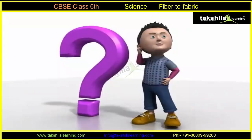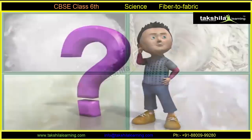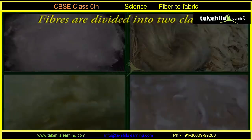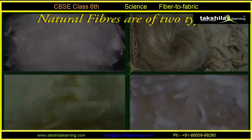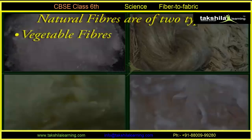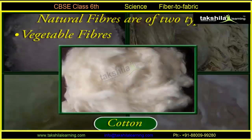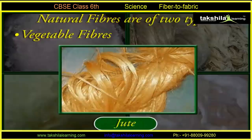You might be thinking: where do these fibers come from? On the basis of their origin, fibers are divided into two classes. One: natural fibers, and two: synthetic fibers. Natural fibers are of two types. Type A: vegetable fibers — these fibers are obtained from plants. Cotton and jute are examples of vegetable fibers because they are obtained from plants.